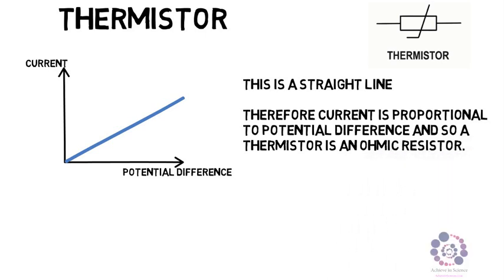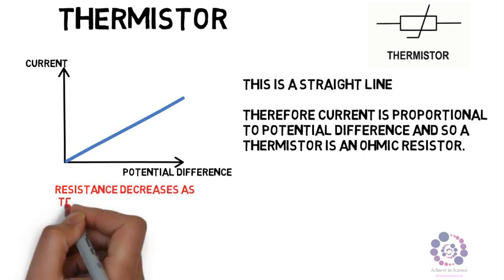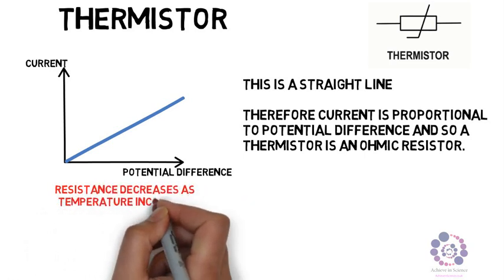Now, resistance decreases as temperature increases and this can be shown by drawing a second line for a thermistor at a higher temperature.